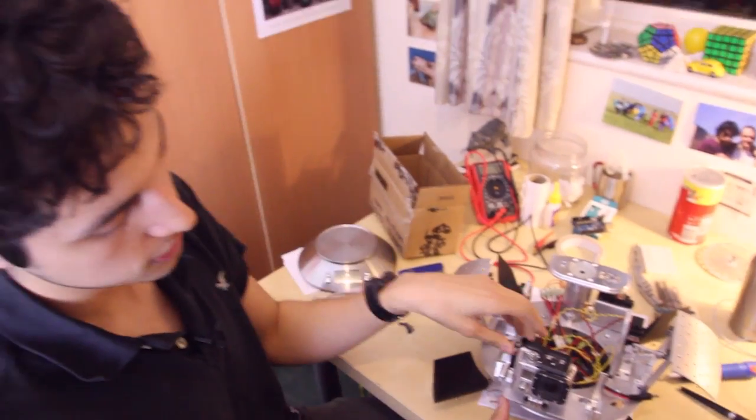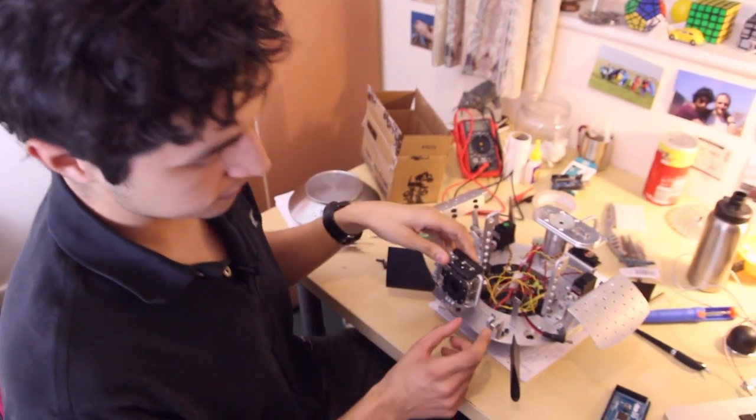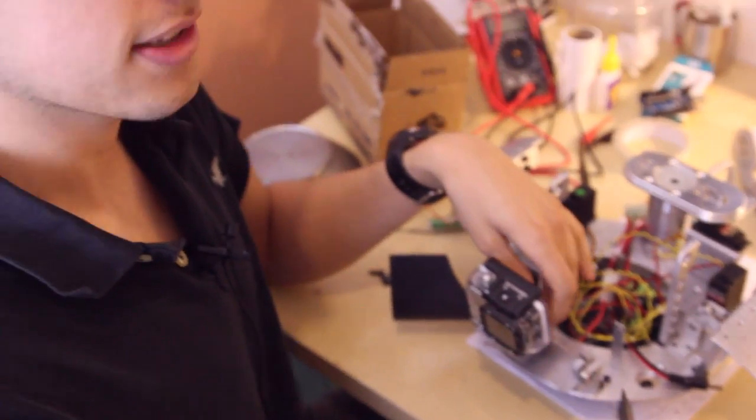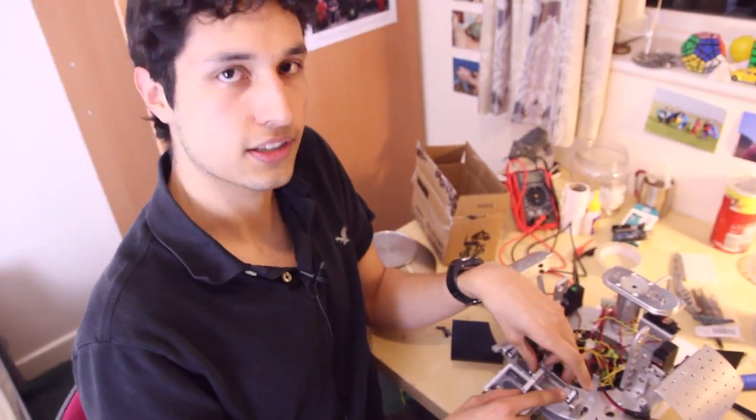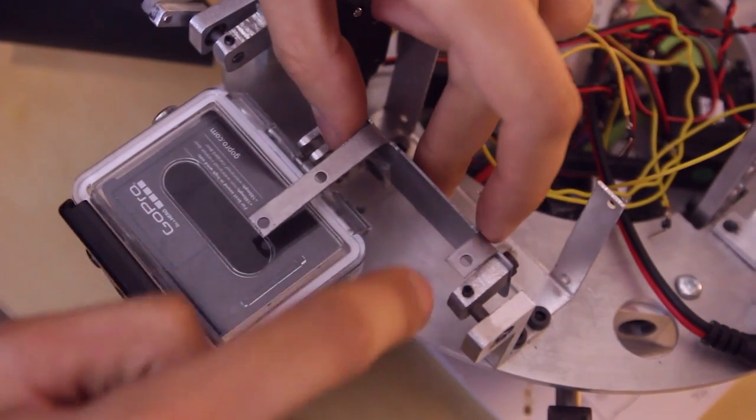We're currently waiting on the vision chip and it tells the Arduino where it is relative to the skydiver so it's the eyes of the robot basically. And those mount here next to the GoPro on this bracket here.